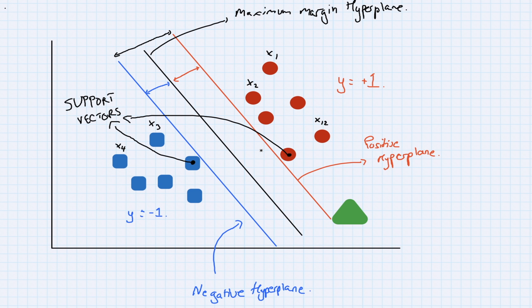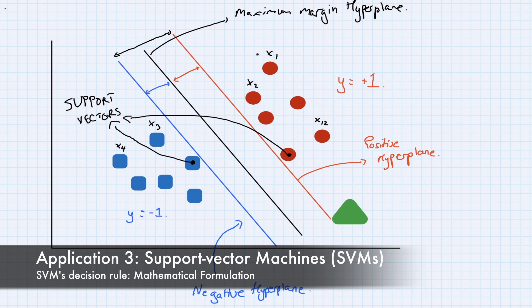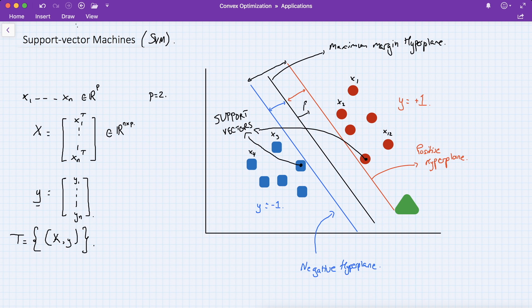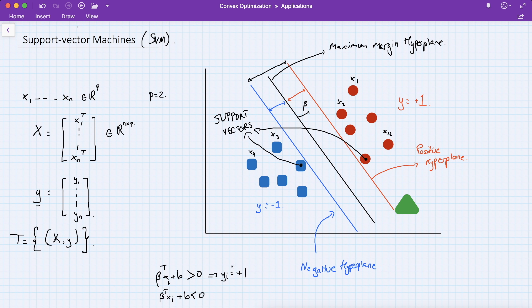How do we formulate this problem mathematically? We can regard SVM as a linear classifier: the problem is to find the normal vector β. The hyperplane takes the form β^T x + b. If a new arriving point xi lies on the red side, then β^T xi + b is positive and we assign yi = +1. If it lies on the blue side, β^T xi + b is negative and yi = −1. This is the decision rule. Both cases can be written as one equation: yi(β^T xi + b) is always positive.